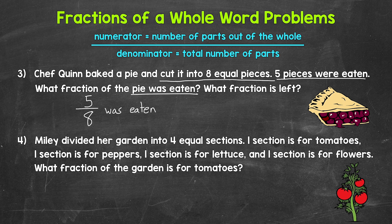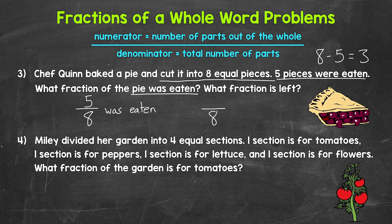Now let's answer the second question: what fraction is left? There were eight total pieces and five were eaten, so we subtract five from eight, giving us three pieces left. The denominator is eight again — eight total pieces. The numerator is three, because there are three pieces left. Three pieces out of the eight total pieces are left. Our fraction: three eighths. So five eighths of the pie was eaten and three eighths of the pie is left.